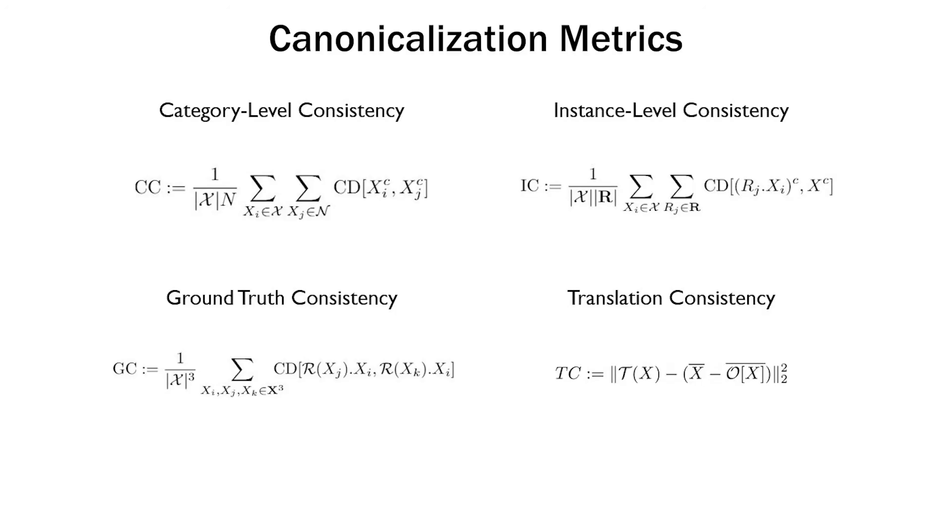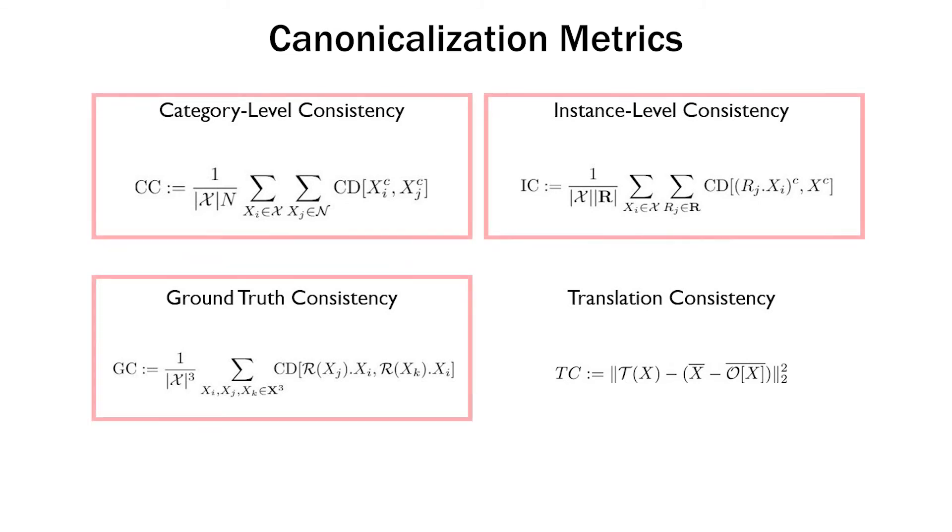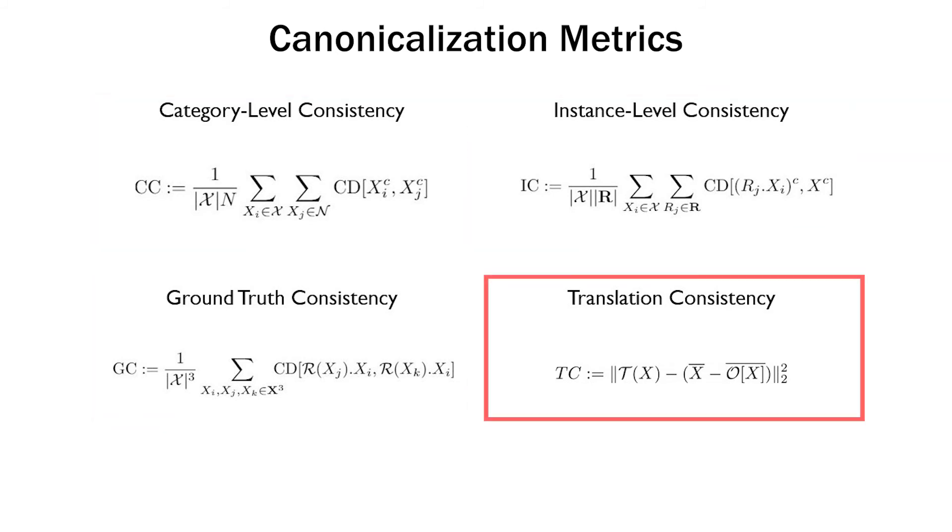We contribute four new metrics that measure different aspects of 3D pose canonicalization while disentangling performance from downstream tasks. The first three of these metrics evaluate rotation, assuming mean centering, while the last metric measures translation errors for partial shapes. Please see the paper for more details.